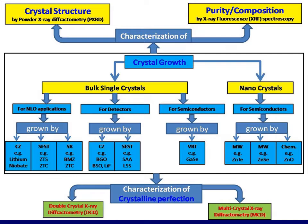Crystal growth: We have bulk single crystals and nanocrystals. Bulk single crystals are used for non-linear optical applications, detectors, and semiconductors. Crystals for NLO applications can be grown by the Czochralski technique, slow evaporation solution technique, and Shankar Narayanan Ramaswamy technique. For detectors, the Czochralski or slow evaporation techniques are used. For semiconductors, the vertical enrichment technique is used, while nanocrystals can be grown by melt growth.